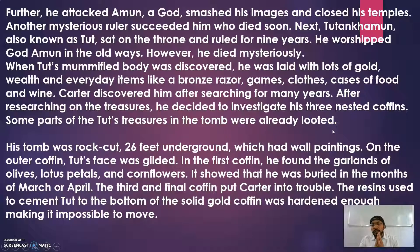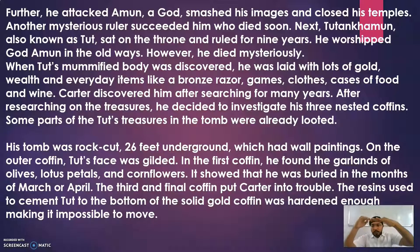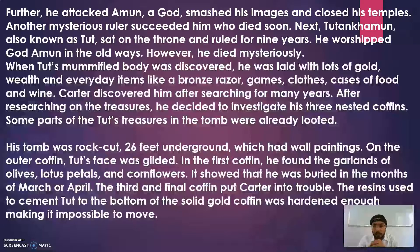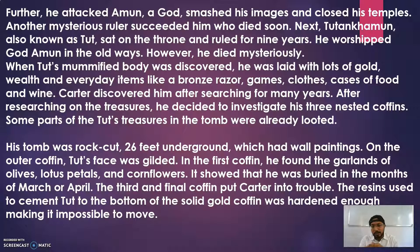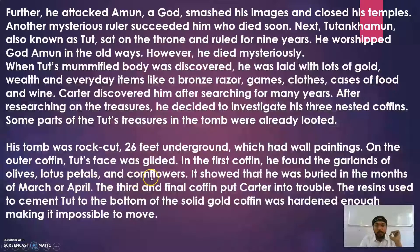Some part of Tut's treasure in the tomb had already been looted — someone who discovered the tomb tried to steal the treasure. His tomb was rock-cut, 26 feet underground, and had wall paintings. On the outer coffin, Tut's face was gilded, meaning decorated with gold. In the first coffin, Carter found a garland of olives, lotus petals, and cornflowers. Although dried up and decomposed, the essence showed he was buried in the months of March and April, because in Egypt, olives, lotus petals, and cornflowers are available in those months.